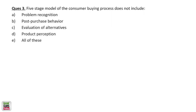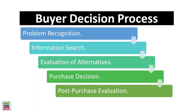The five-stage model of the consumer buying process — what are the stages? You start with problem recognition, then you get information, you evaluate the alternatives, you make the purchase decision, and then post-purchase evaluation. So you recognized that you need a two-wheeler.